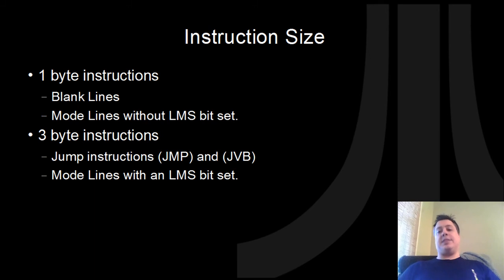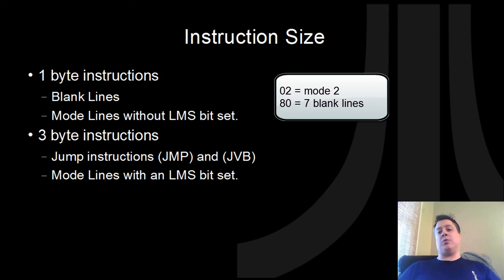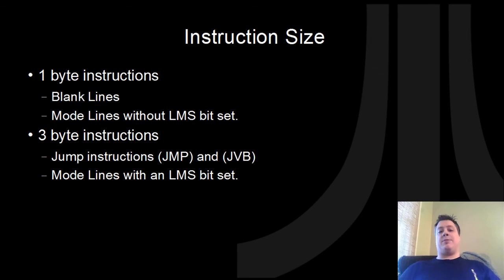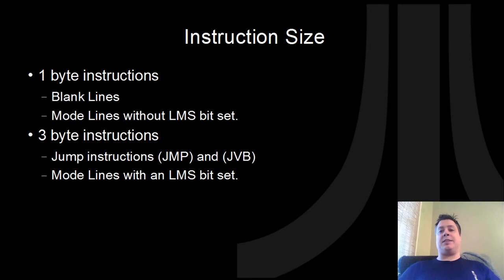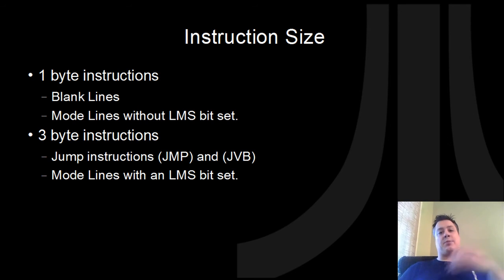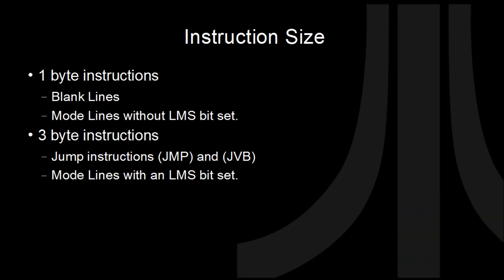There are two different instruction sizes inside the Antic: one-byte instructions and three-byte instructions. One-byte instructions are used by blank lines and mode lines without the LMS bit set. Three-byte instructions contain an address — basically the instruction plus the address — and because we're working on a 6502, the address is stored little-endian, that is, least significant byte first. So, in addition to jump instructions, you also have mode lines with the LMS bit set so that you can grab the screen from a specific address.